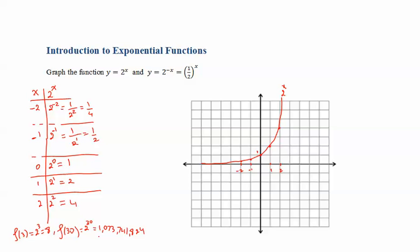That's why we say something that grows fast, we say it grows exponentially. If we compare with f of 30 for x squared — 30 squared equals 900. So as you see, when x is 30, the exponential function grows very, very large versus x squared. So keep that in mind.